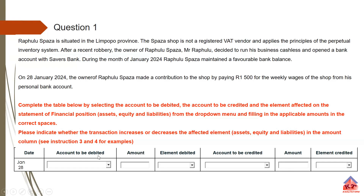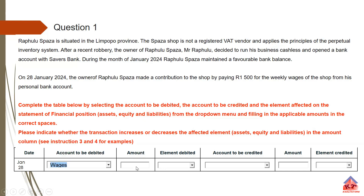The account to be debited must be the wages account. We search for wages in the drop-down and it's available. The amount is $1,500 — we are reducing our expenses, and this element is part of equity, so it reduces your equity. The account to be credited is capital. Since it's increasing capital, we enter $1,500 and capital is an equity account. If your answers are like this, you are guaranteed to get 100% for this question. Let us move on now to the next question.